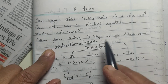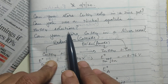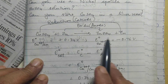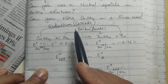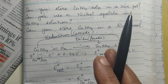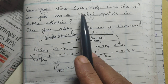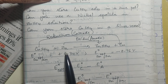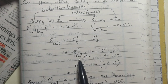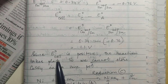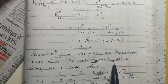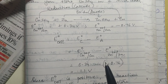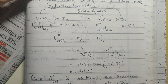Practical questions include: Can you store copper sulfate solution in a zinc pot? Can you use a nickel spatula in zinc sulfate solution? Can you store copper sulfate in a silver vessel? To answer these, calculate E°cell for the relevant reaction. For example, for Cu²⁺ reacting with zinc: E°cell = 1.1 V. Since E°cell is positive, the reaction takes place — meaning you cannot store copper sulfate in a zinc pot. If E°cell were negative, the reaction would not occur and storage would be safe.